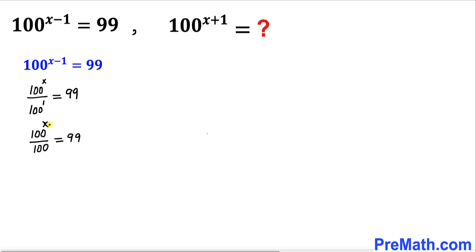Now in this next step we are going to isolate 100 power x. So we are going to multiply both sides by 100. And now we can see this 100 and 100 are gone, so we ended up with 100 power x equal to